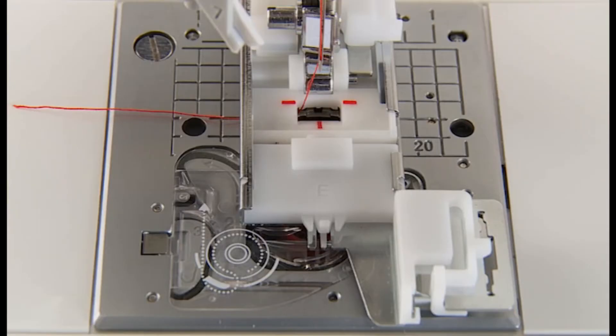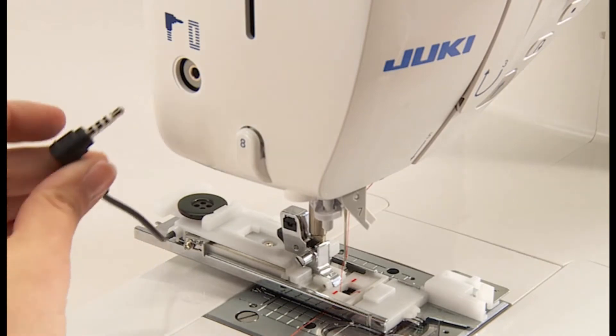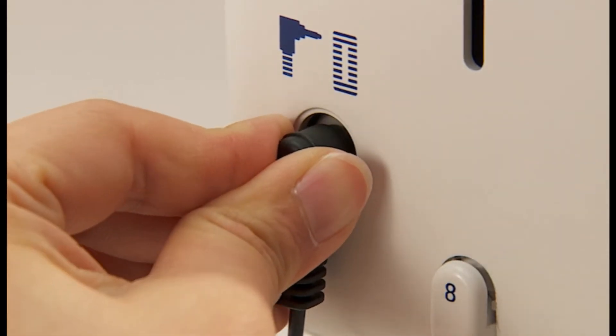After setting the presser foot, check that there is a clearance. Set the buttonhole sensor pin. Insert the pin into the hole completely.